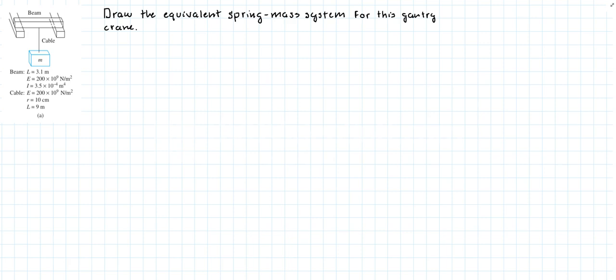Alright, in this video we're going to deal with the equivalent stiffness of a system. We have a gantry crane here that is composed of a beam and a cable attached to that beam which is in turn attached to a mass. So we are asked to draw the equivalent spring mass system for this gantry crane.